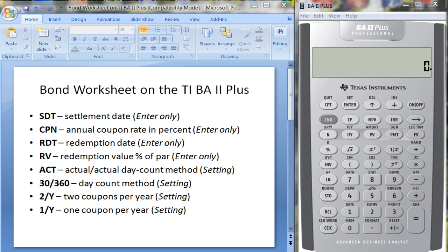So let me show you how to use this. Over here I have some of the functions or variables that you need to input. If you hit second and the nine key—above the nine it says bond—you get the bond worksheet. Now this is the settlement date, when you get the bond. The default is 12/31/1990, December 31st 1990.